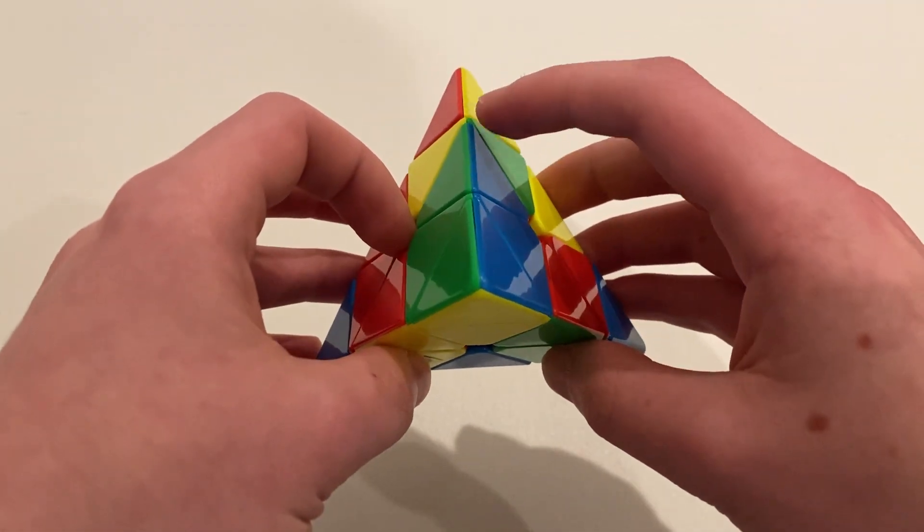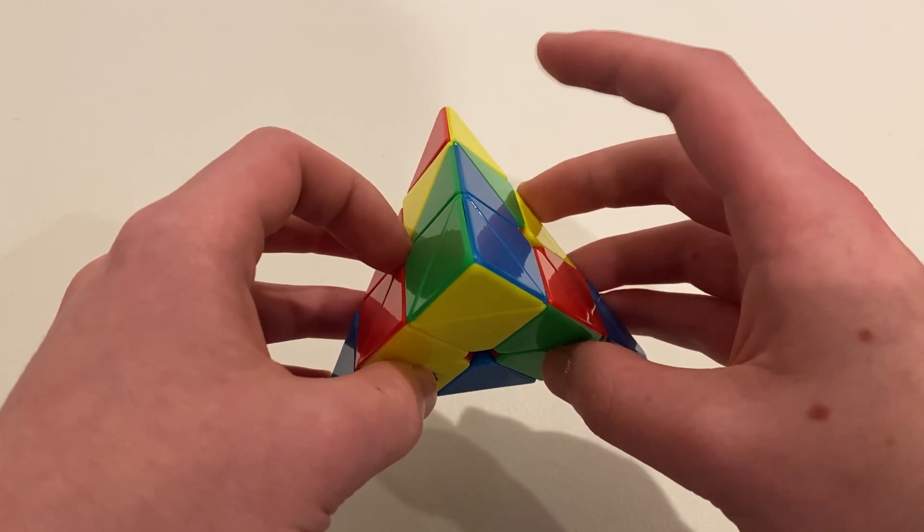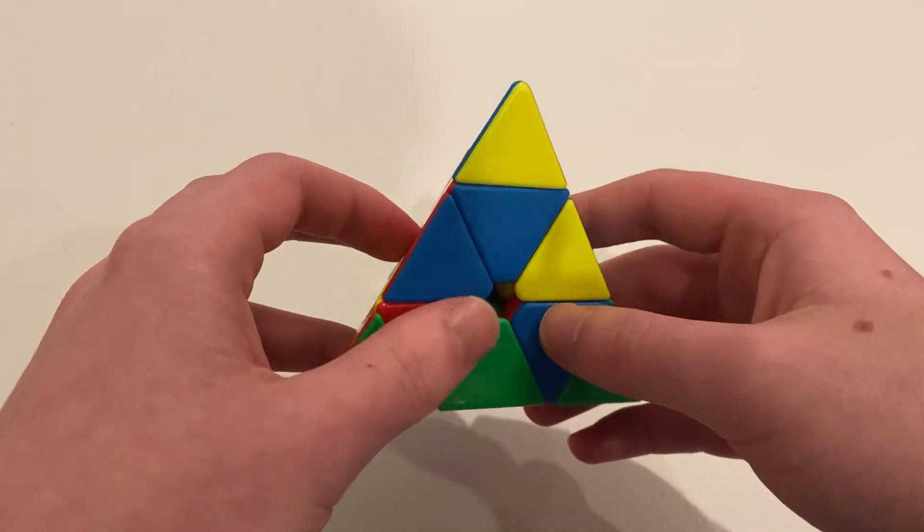And I saw that that would give me a solved top layer, so a last layer skip, with a UAUF. So I decided that the best orientation to do that from would be here.